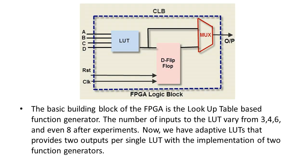The basic building block of the FPGA is the lookup table (LUT) based function generator. The number of inputs to the LUT varies from 3, 4, 6, and even 8. After experiments, we now have adaptive LUTs that provide two outputs per single LUT with the implementation of two function generators.